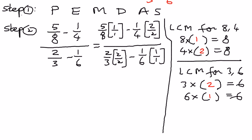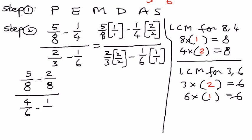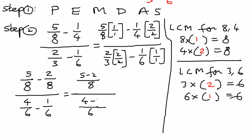Multiplying the numerators and denominators: in the numerator part, 5 times 1 is 5 over 8, minus 1 times 2 is 2 over 8. In the denominator part, 2 times 2 is 4 over 6, minus 1 times 1 is 1 over 6. Since fractions share the same denominator, we write the denominator once and combine the numerators: 5 minus 2 over 8, and 4 minus 1 over 6.